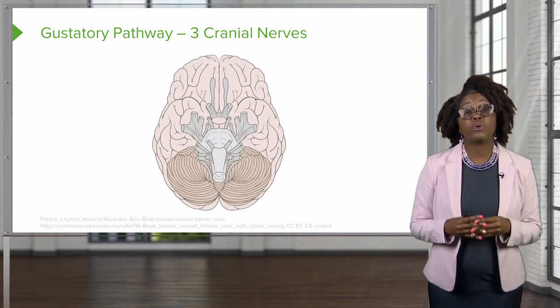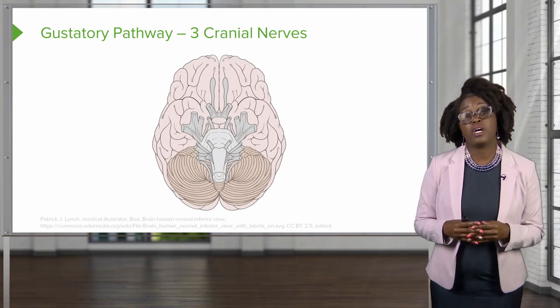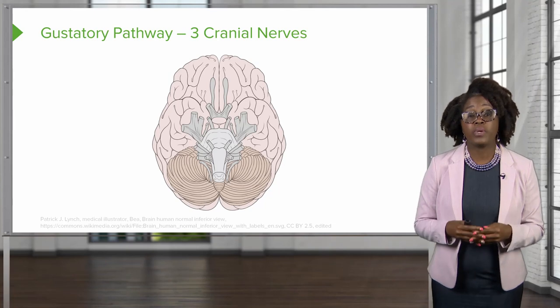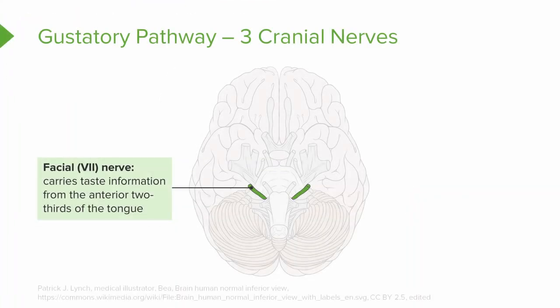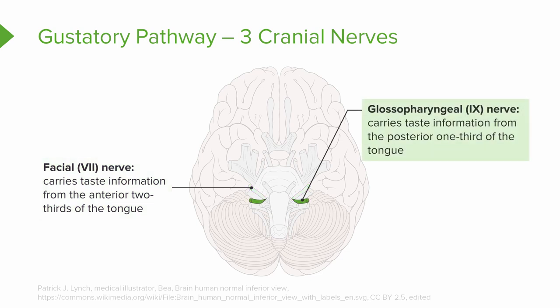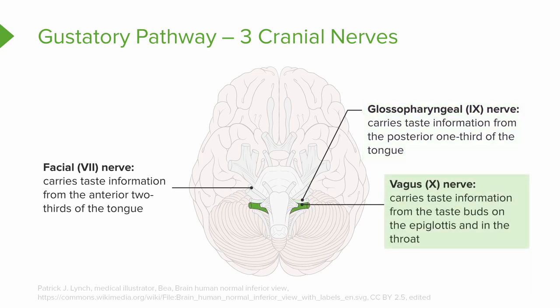In the gustatory pathway, the taste buds are innervated by three cranial nerves. This includes the facial nerve, which carries taste information from the anterior two-thirds of the tongue. The glossopharyngeal nerve carries taste information from the posterior one-third of the tongue. And the vagus nerve is responsible for carrying taste information from taste buds located on the epiglottis and in the throat.